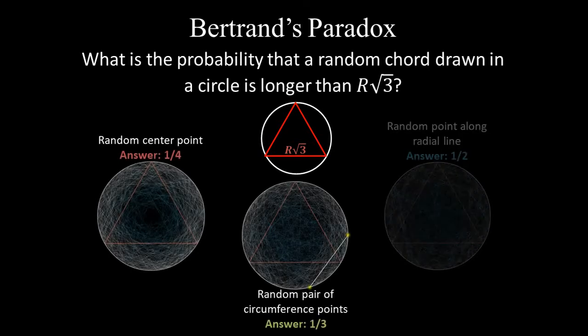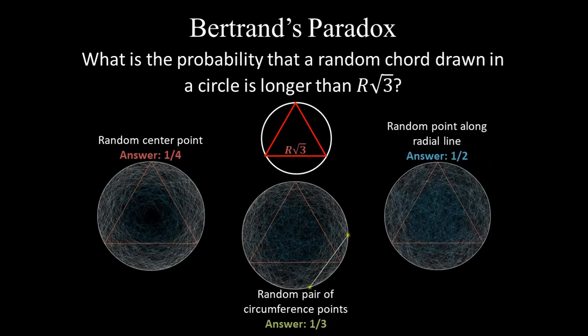Bertrand's Paradox poses a deceptively simple question about the probable length of a random chord drawn in a circle, and reveals that the answer varies depending on what you define as a uniform distribution of random chords. Dynamic light scattering, or DLS, is often used to answer another supposedly simple question.